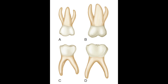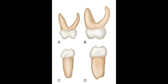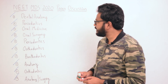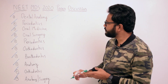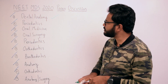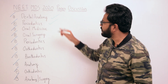You can identify these based on the number of roots. In the case of maxillary molars, you have a single palatal root and two buccal roots — mesiobuccal and distobuccal. This is the mesial view, showing primary right molars from the mesial aspect. Now let's move to the next question from periodontics.